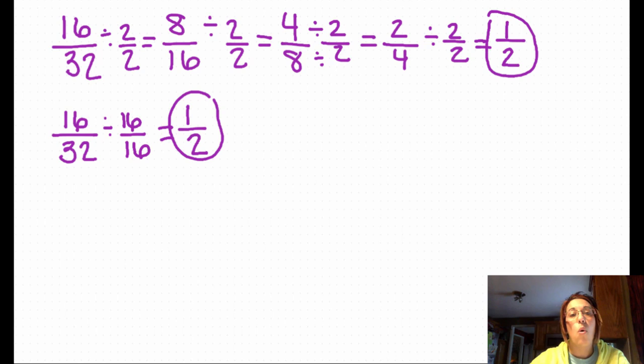Strategy one, I did a whole lot more work, but there's absolutely nothing wrong with that. Strategy number two, I did the one stop shop. So one set of division and I got to my simplest form.